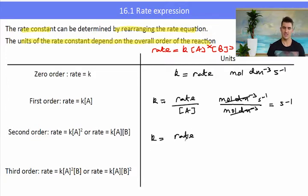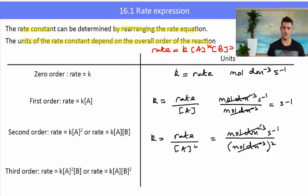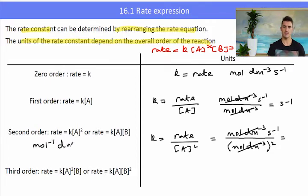For a second order rate equation — which could be kA squared or kAB — the rate is mole per decimetre cubed per second, divided by concentration squared, which is mole per decimetre cubed squared. We cancel one of the mole per decimetre cubeds, giving us s⁻¹ over mole per decimetre cubed. Bringing that to the top gives us units of mol⁻¹ dm³ s⁻¹.